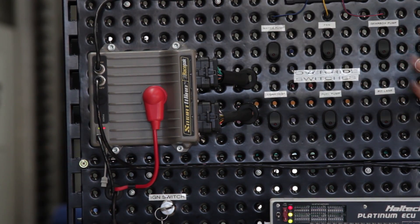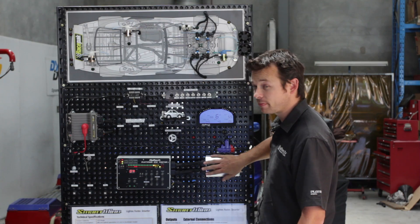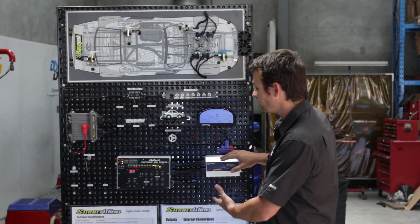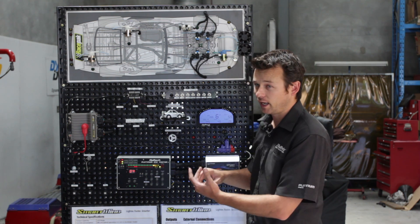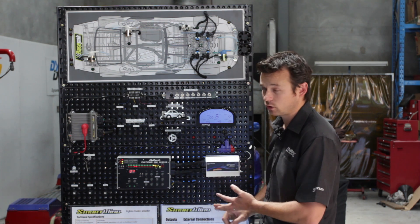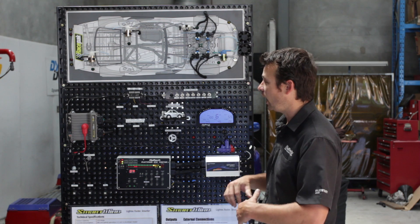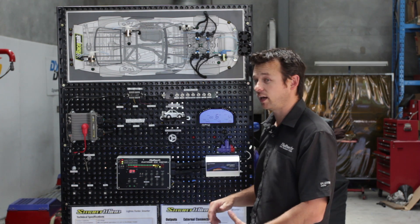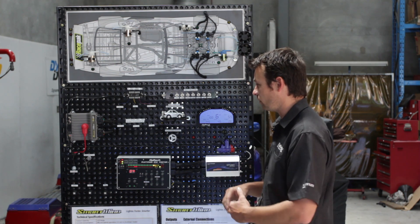Now the SmartWire gets all of its information from the Haltech and from this switch panel. So the Haltech sends it information about engine RPM, whether it wants the fuel pump on or off, coolant temperature, air temperature, and then from that you can make decisions like do I want to turn on a cooling fan, do I want to turn on a gearbox fan.